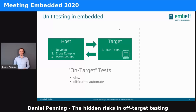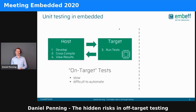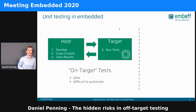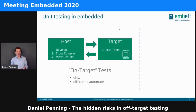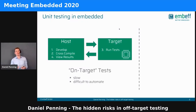Before we start with the talk, it's really important that you grasp these terms: off-target and on-target testing. Basically, these terms were coined by James Grenning. He wrote a really good book, Test-Driven Development for Embedded C. This book explained how you can take your code and abstract it in a way that you can run it on any computer — abstract away the hardware dependencies.